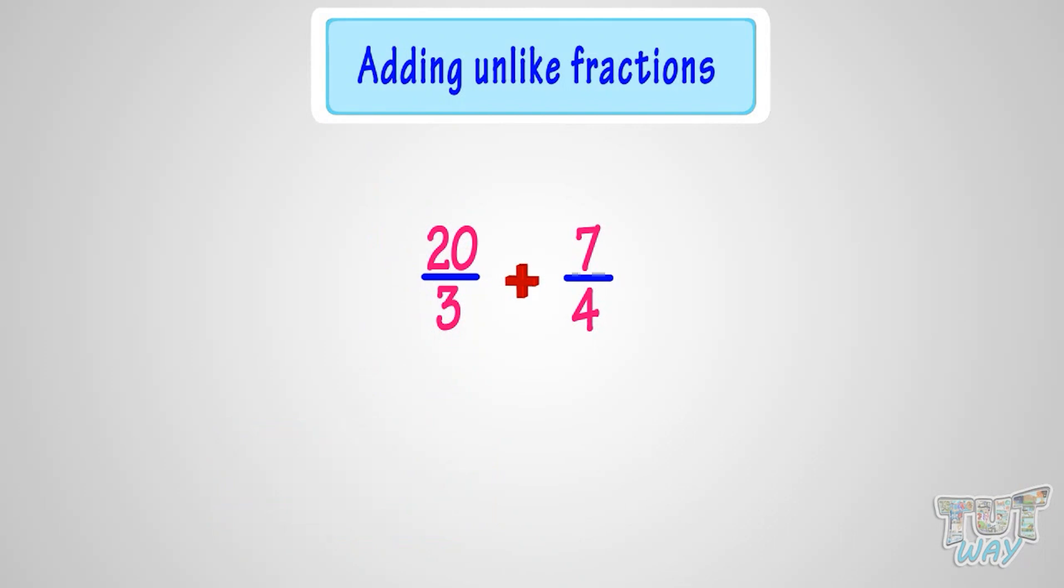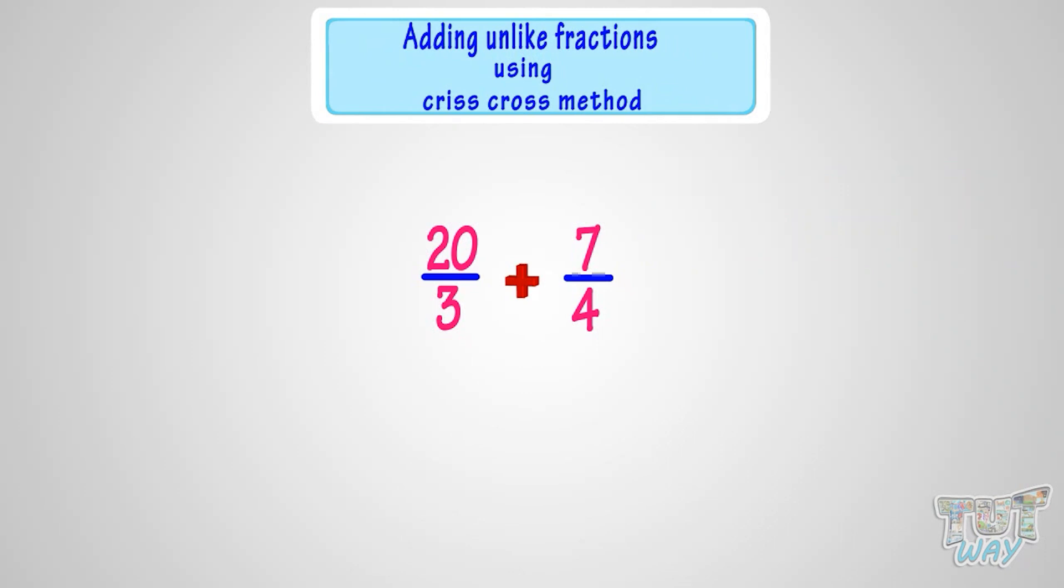We learned that we need to convert unlike fractions to like fractions before we add them. That is, the denominators should be the same. Now use the criss-cross method to make them like fractions.